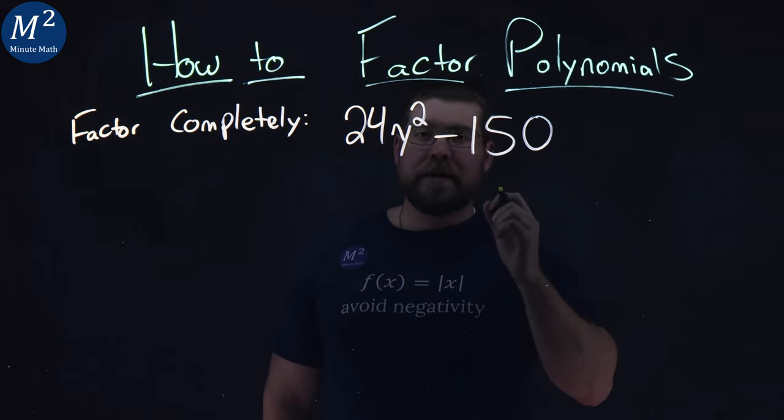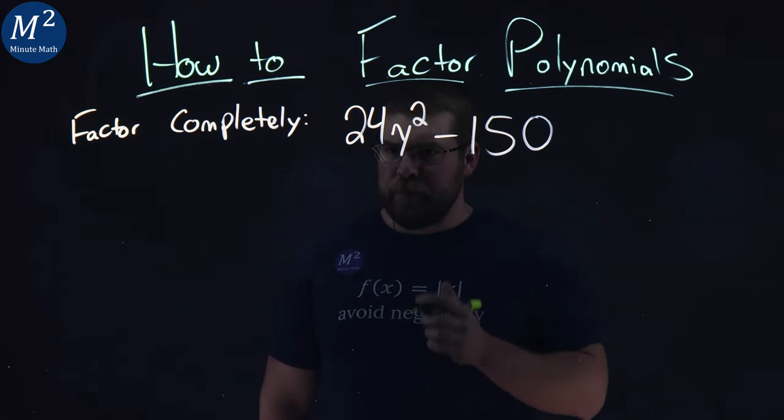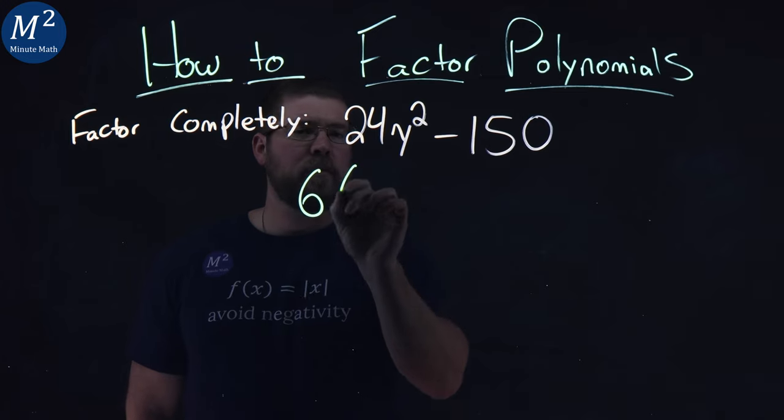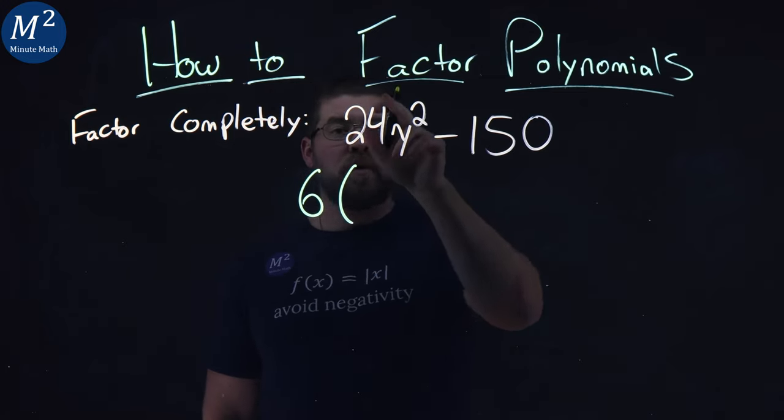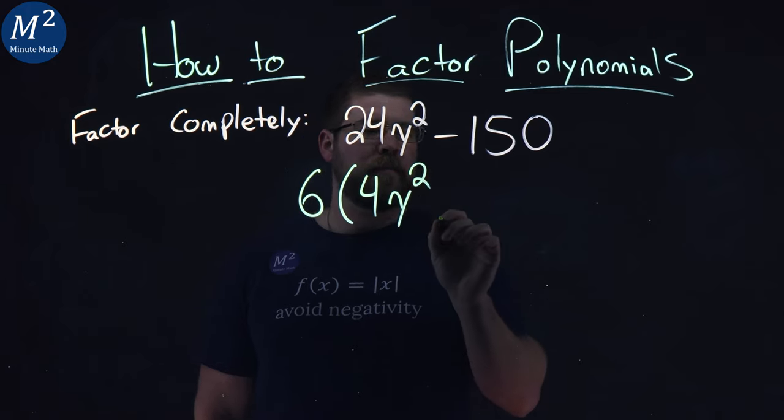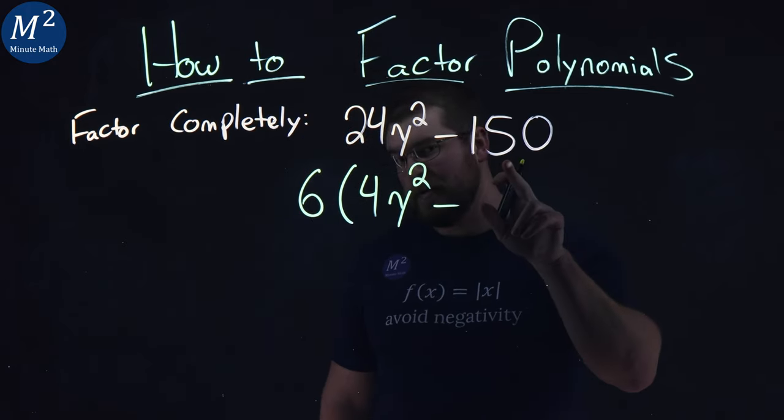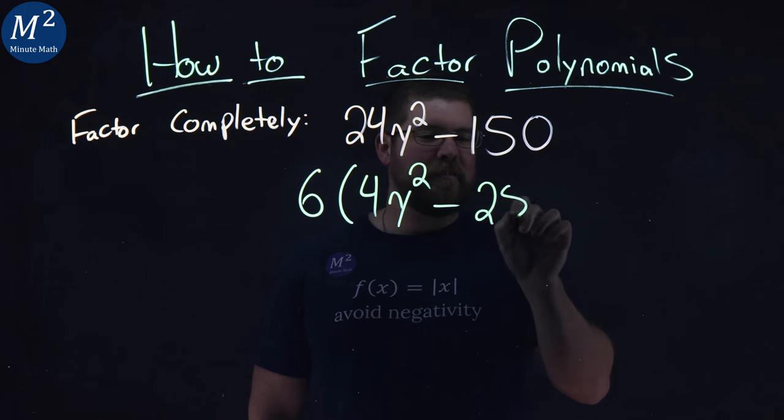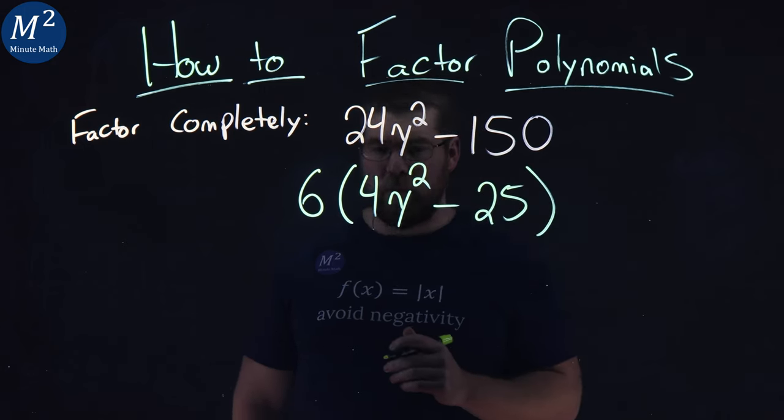We have 24y squared and 150. Well, 6 goes into each one of these. If I pull out a 6, what am I left with? 24 divided by 6 comes down to be 4y squared minus, 6 goes into 150, 25 times.